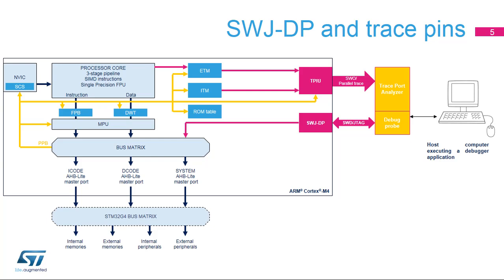Regarding the trace output, the TPIU offers two possibilities: either the asynchronous one-wire trace port called Serial Wire Output, or SWO, or the synchronous five-wire trace port including a clock signal and one, two, or four bits of data. The SWO is multiplexed with the JTAG TDO signal. Consequently, it cannot be used at the same time as the JTAG protocol — SWD must be chosen.